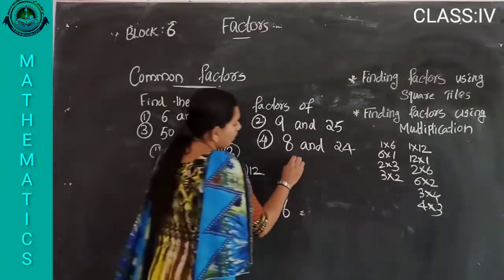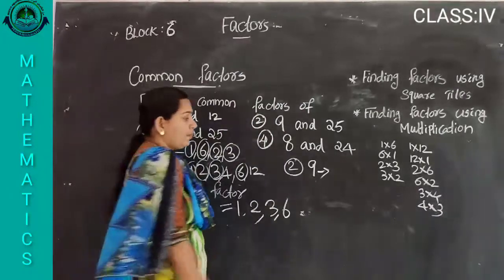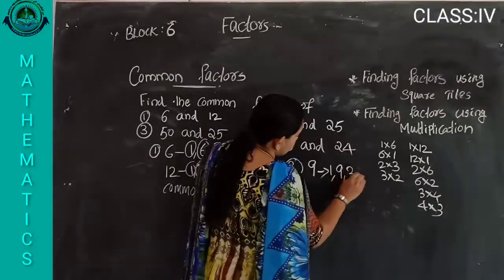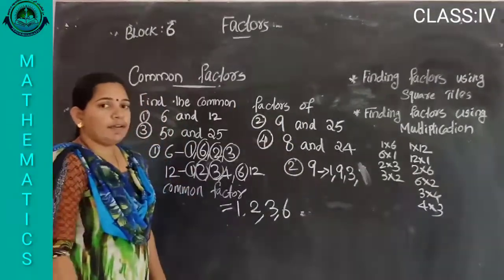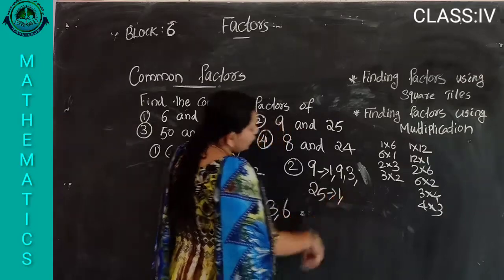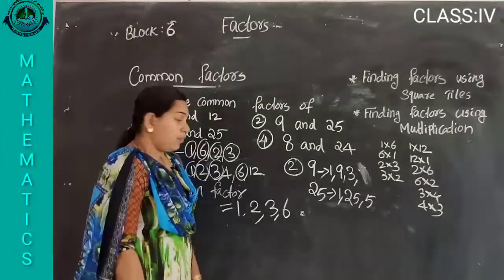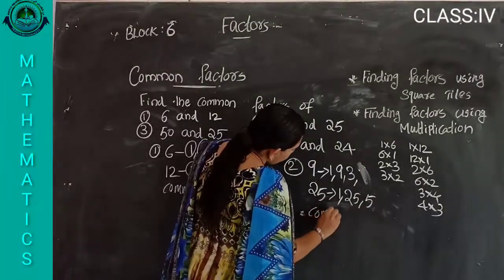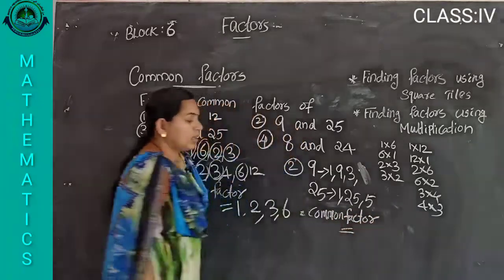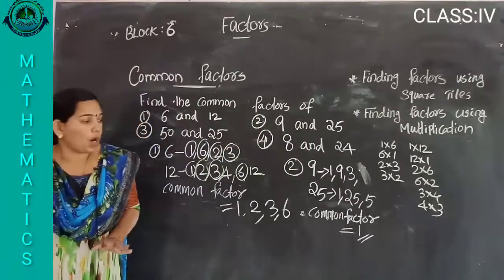Second question: nine and twenty-five. Factors of nine: one into nine, three into three. Factors of twenty-five: one into twenty-five, five into five. So what are the common factors? Only one. The common factor of nine and twenty-five is one only.